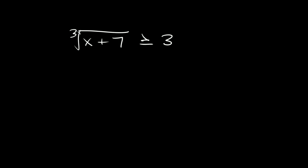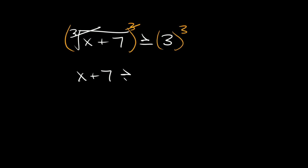Here's another one. We have the cube root of x plus seven is greater than or equal to three. Since we're dealing with a cube root, in order to get rid of it you just cube the whole thing. What we do to one side we do to the other, so the cube root and the cubed exponent cancel out, leaving x plus seven is greater than or equal to 27. We subtract seven, so x is greater than or equal to 20.